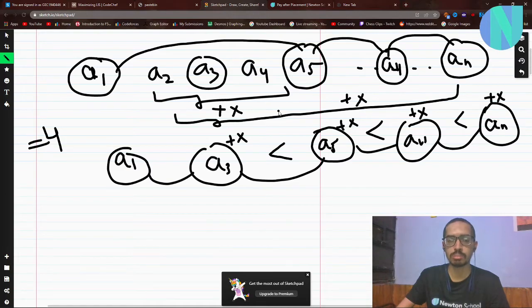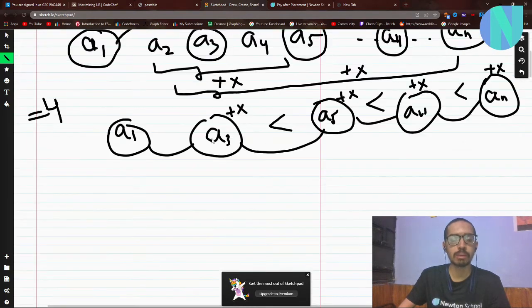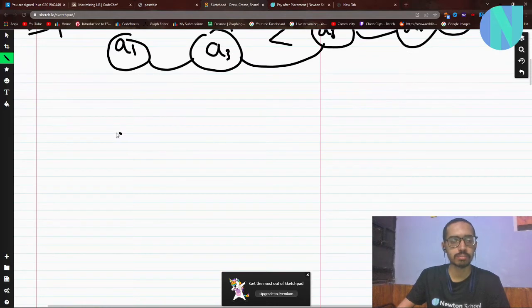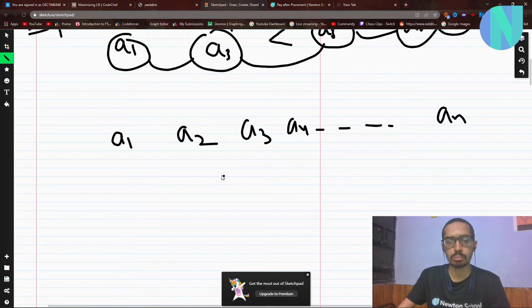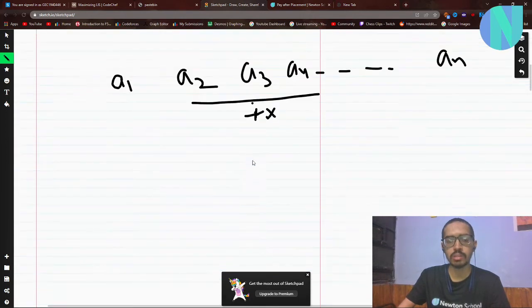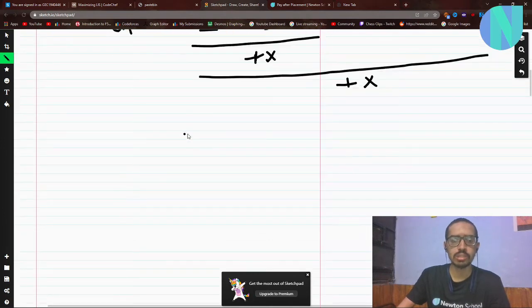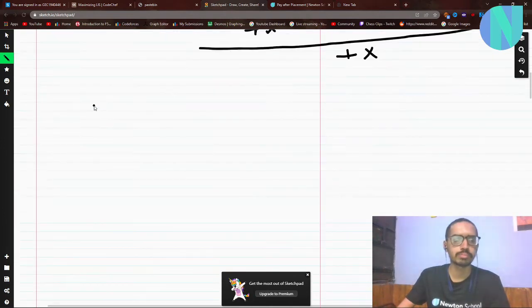This is the key observation: if we are applying some operation plus x, it is always optimal to do it for the entire suffix. The question now boils down to this.